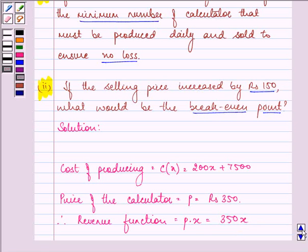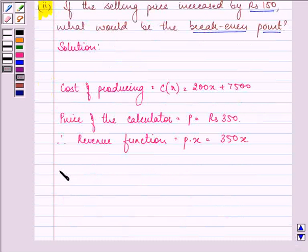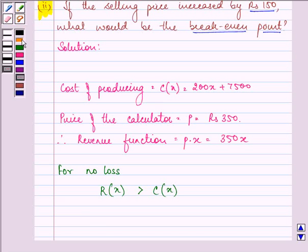Further, firstly, we need to find out the minimum number of calculators that must be produced daily and sold to ensure no loss. So for no loss, our revenue function should always be greater than or equal to the cost function to ensure that we are not having any loss.